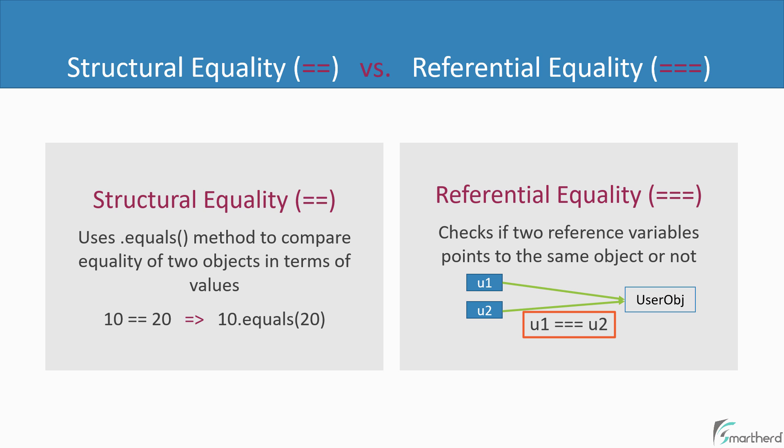Nice and simple. In the case of referential equality, we don't worry about the value of the object — we just need to know whether these two variables point to the same object or not. So let us understand them using examples.